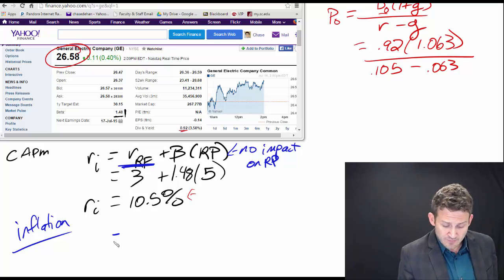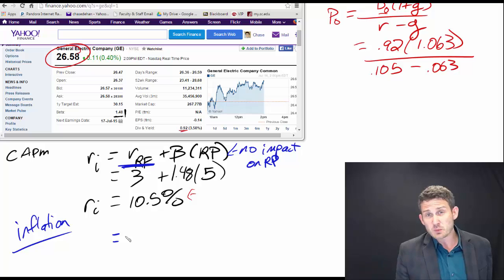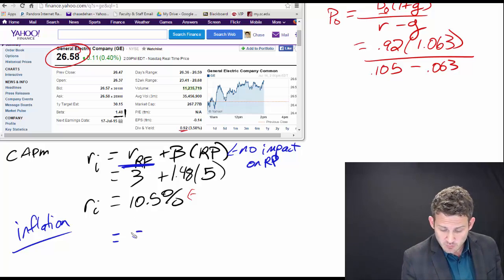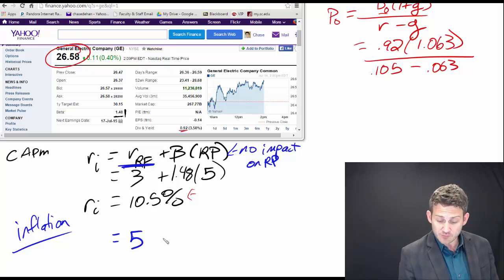So let's say that we have our inflation went up from near zero where it's at today and it goes up to two percentage points. That means our new risk-free rate is going to be five percent.